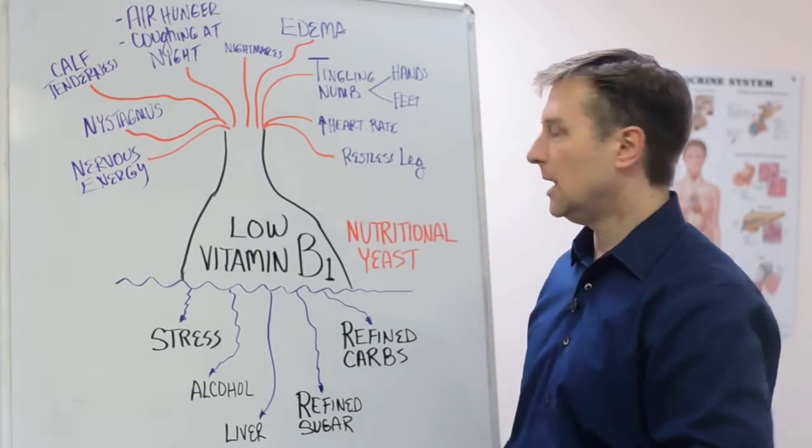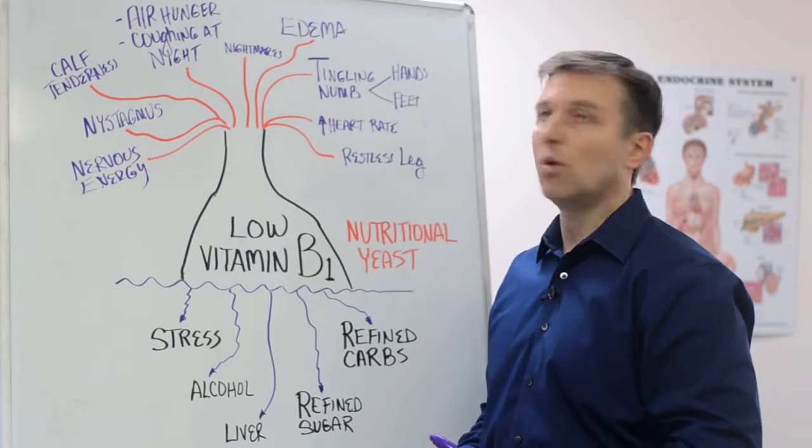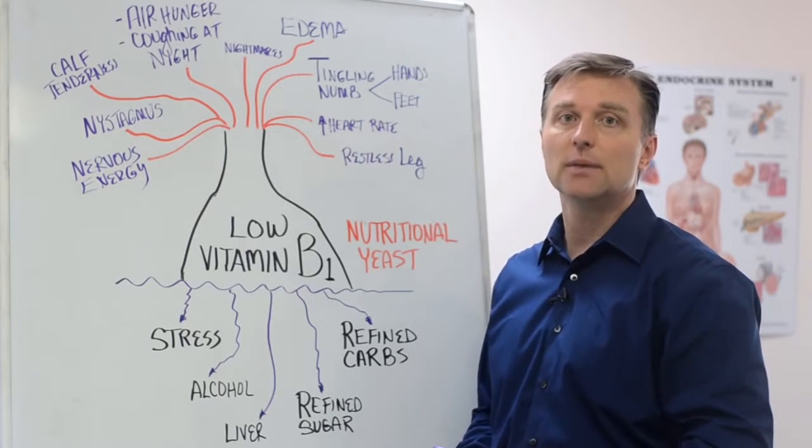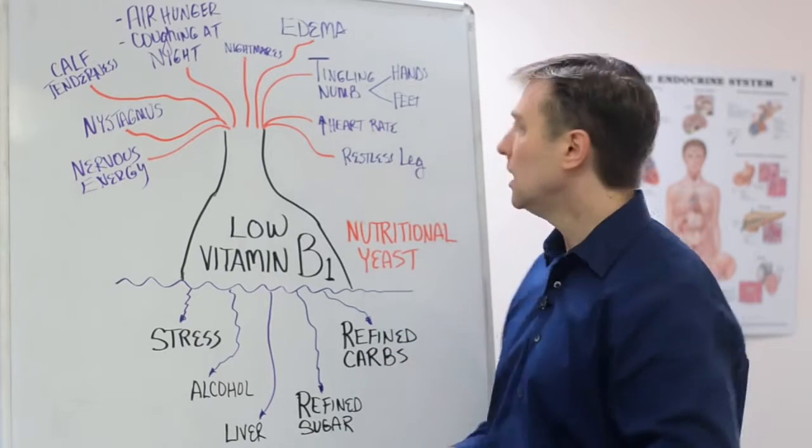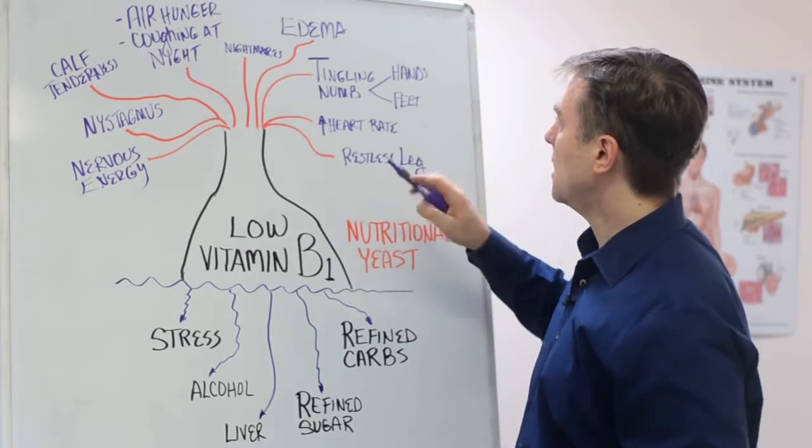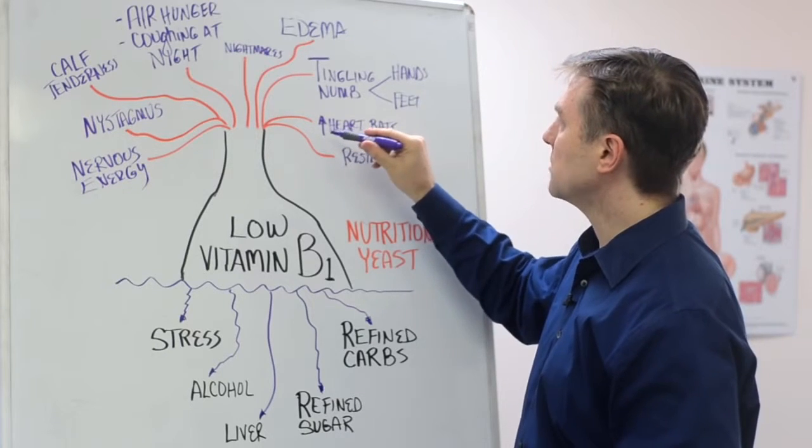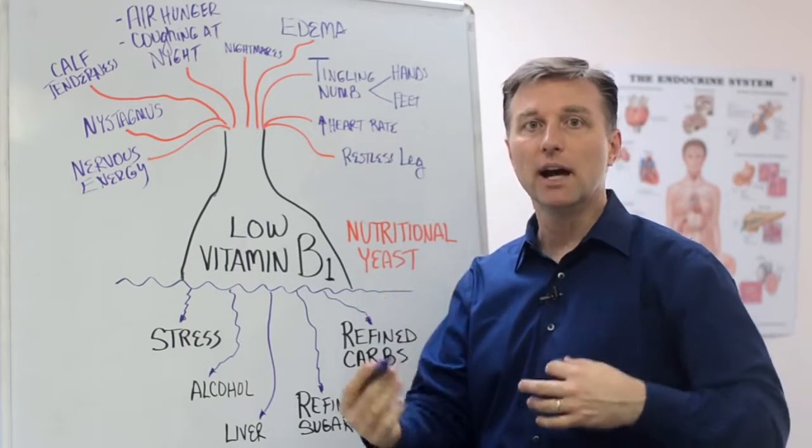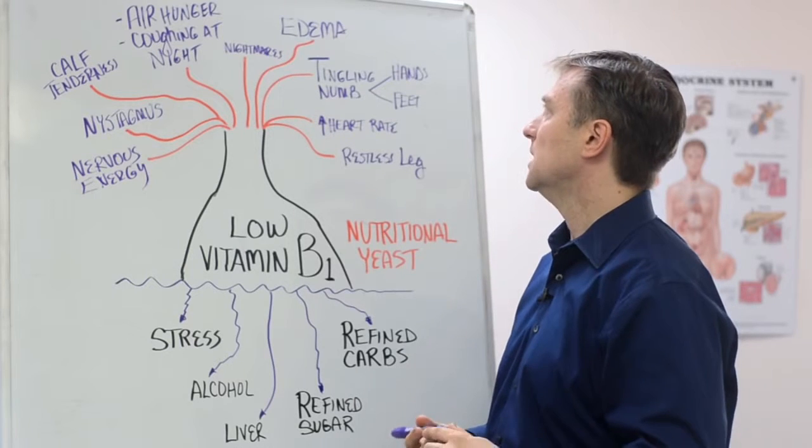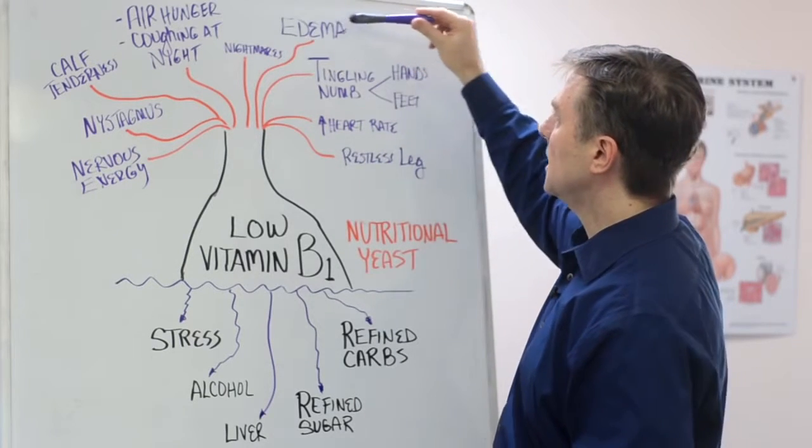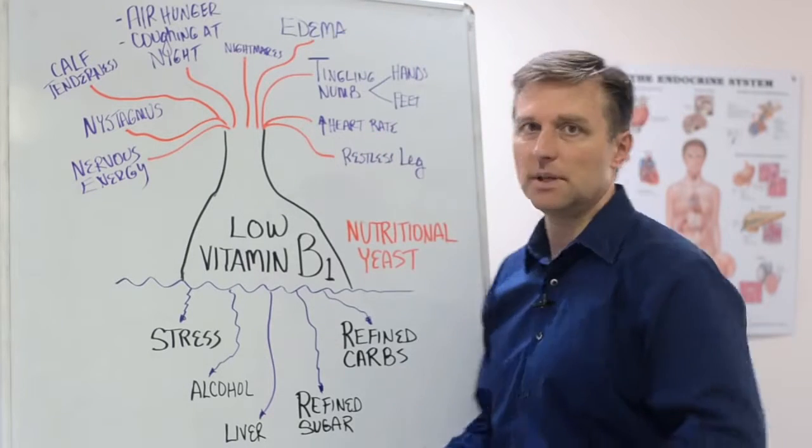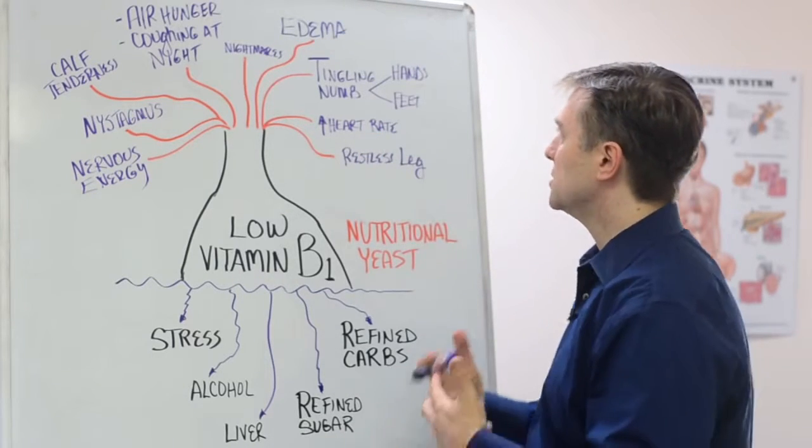If you look up low vitamin B1, a classic vitamin deficiency, like really severe, they call that beriberi. Beriberi affects the heart. And that's why the pulse rate starts going higher and higher with a B1 deficiency. You also end up backing up with fluid into your legs, edema from a low vitamin B1 as well because the heart is weak.